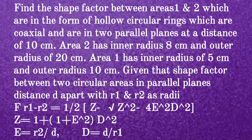The shape factor between two circular areas in parallel planes a distance d apart with radii R1 and R2 is: F(R1→R2) = (1/2) × [Z − √(Z² − 4E²D²)], where Z = 1 + (1 + E²)D², E = R2/d, and D = d/R1.